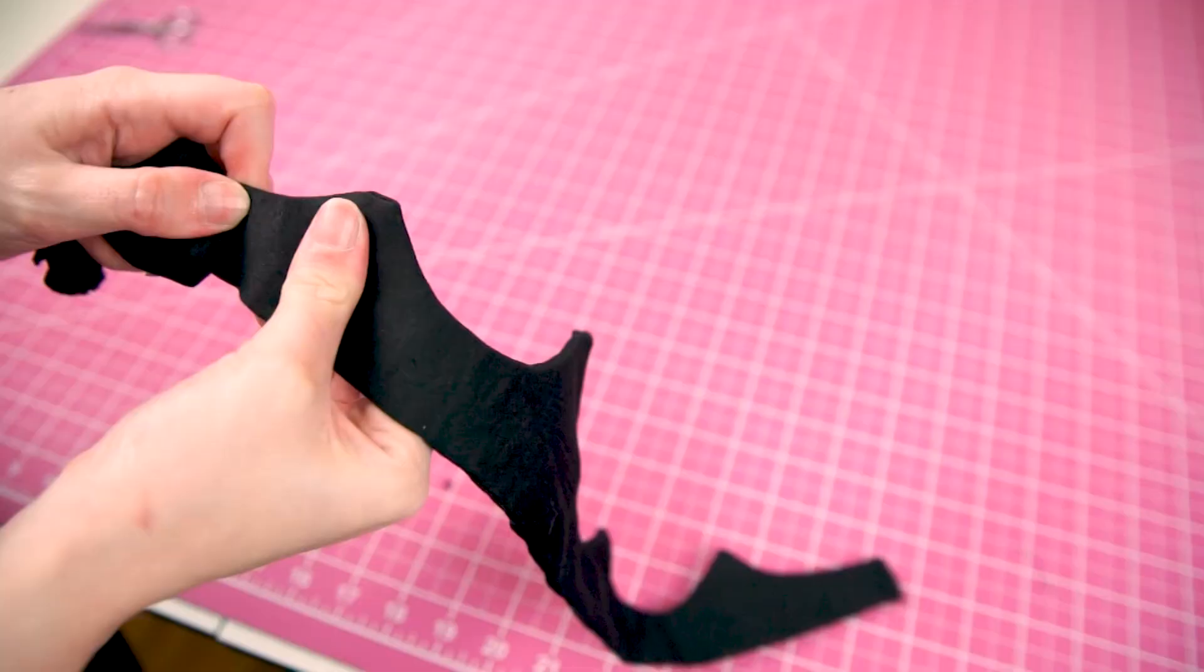If you don't have a corner press you can just use a chopstick. Just don't use anything too sharp or it'll just rip through the fabric. You want something pointy but dull to really pop out those crisp points.